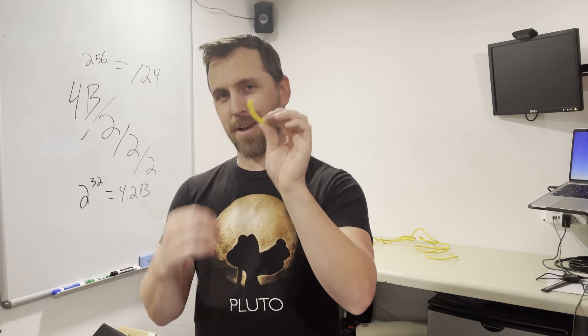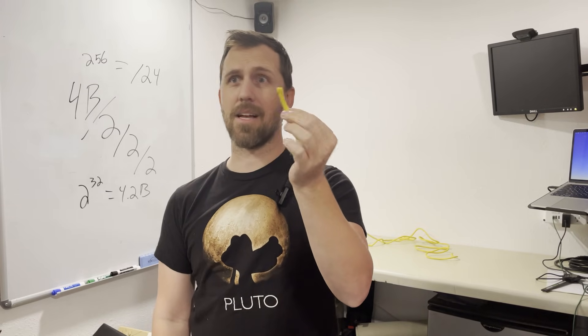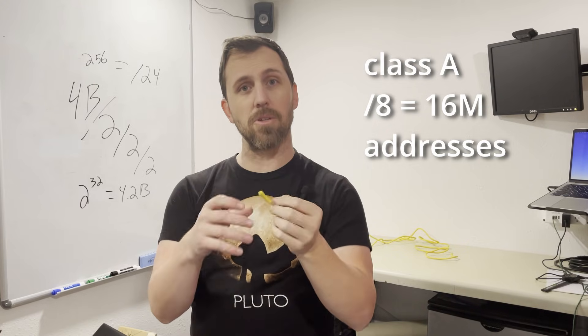This is a slash 4 from my rope. This is still a lot of IP addresses, because a class A is like a slash 8. So this is still a ton of IP addresses, but you get smaller and smaller and smaller.